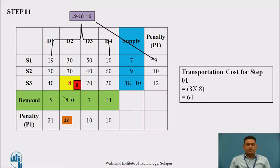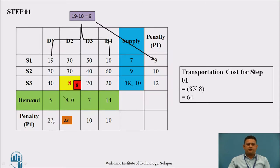In the given problem, there are sources S1, S2, S3 and destinations D1, D2, D3, and D4. In the first row, the first smallest is 10 and the second smallest is 90, so the difference — penalty 1 for the row — is 9. In the second row, the first smallest is 30 and the second smallest is 40, so the difference is 10. We carry the same methodology for the columns D1, D2, D3, and D4. The first penalty for D1 is 21, for D2 it is 22, and for D3 and D4 it is 10.